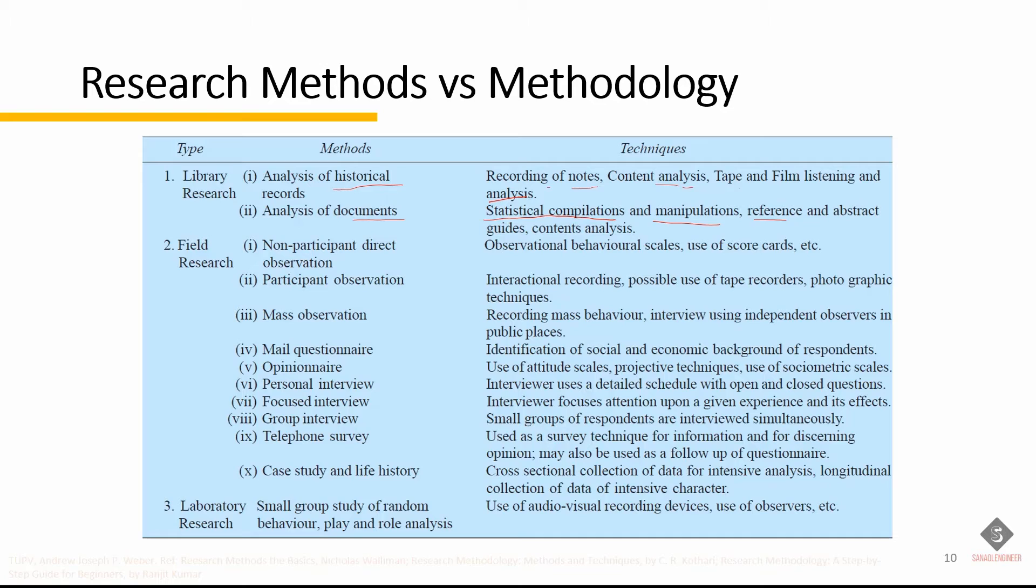Research methods are the various procedures, schemes, and algorithms that are used in research. All the methods used by a researcher during a research study are termed as research methods. They are essentially planned, systematic, and scientific. They include theoretical procedures, experimental studies, numerical schemes, statistical approaches, etc. Research methods help us collect samples, data, and find a solution to a problem.